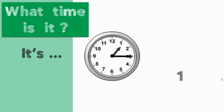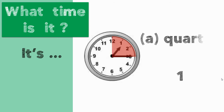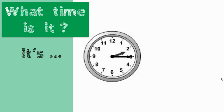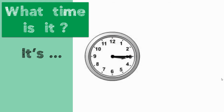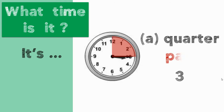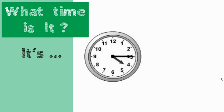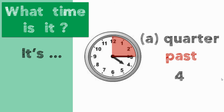What time is it? You can see that it's 1 hour and 15 minutes — it's a quarter past 1. Now it's 2 hours and 15 minutes — it's a quarter past 2. This time it's 3 hours and 15 minutes — it's a quarter past 3. This time it's 4 hours and 15 minutes — a quarter past 4.